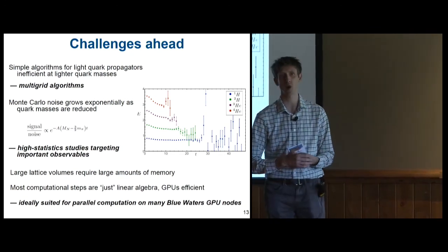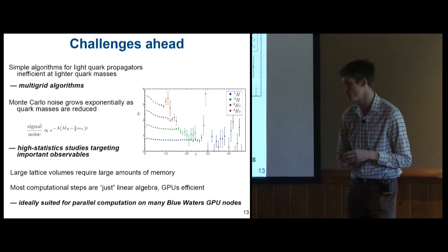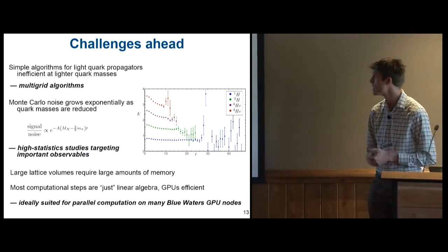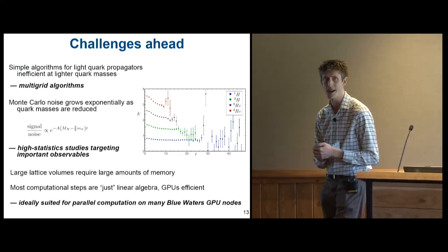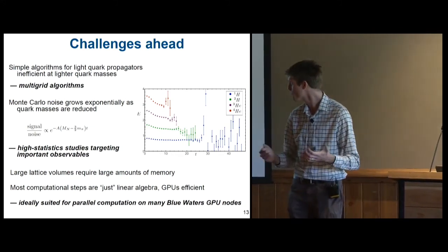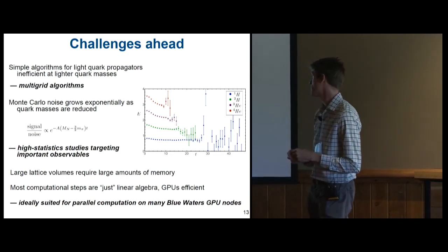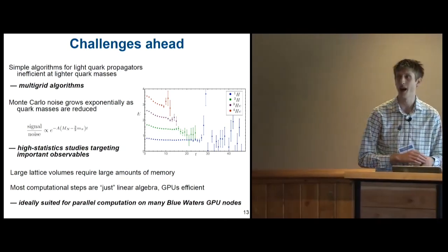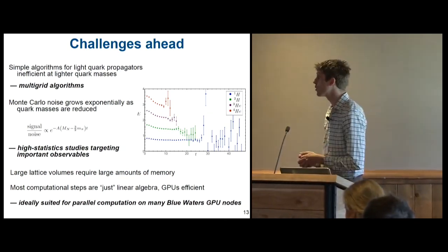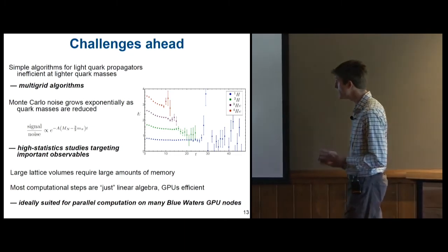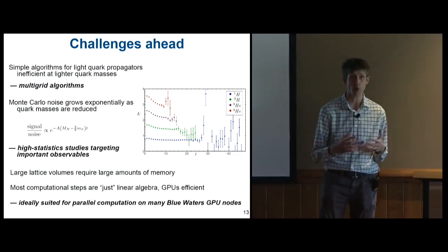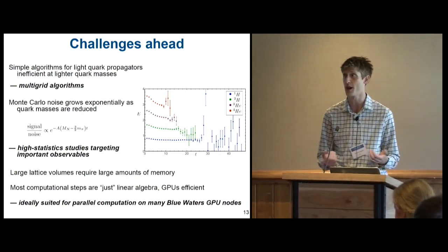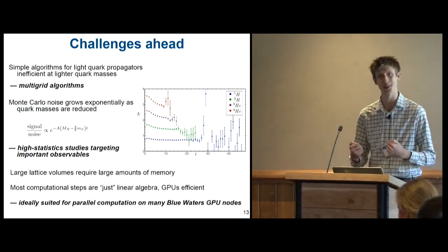And that gets hard. So calculating these late quark propagators becomes difficult because the matrices become ill-conditioned and your solver time diverges as you take the quark masses light. Your Monte Carlo noise grows exponentially as your quark masses are reduced or your nucleus gets bigger. And we need large lattices to be able to fit nuclei. These require large amounts of memory. And most of our steps are just linear algebra. So things like GPUs are really efficient for lattice QCD calculations. But we need a huge amount of memory to be able to store these lattices on GPUs. And that's where something like large GPU node jobs on Blue Waters started looking really appealing to us.